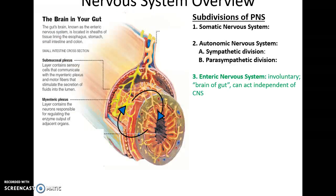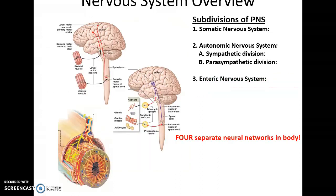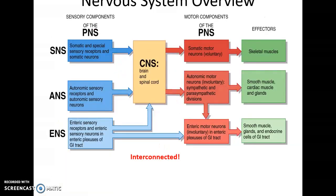A third subdivision of the peripheral nervous system is the enteric nervous system — the series of nerve tissue found within the gastrointestinal tract, often referred to as the brain of the gut, because the GI tract can act independently of the central nervous system. This means we have four separate neural networks connecting to the structures of our body, covering the somatic, autonomic, and enteric nervous systems and how they are all interconnected.